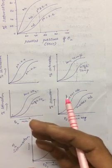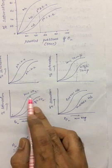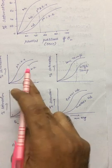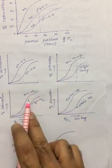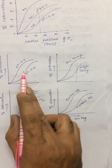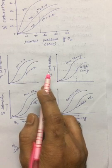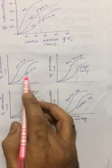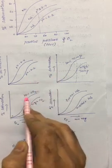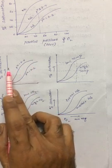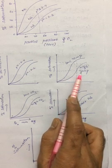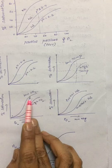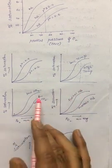For better saturation of hemoglobin with dioxygen, CO₂ should be low, temperature should be low, and pH should be high. These three conditions determine whether the equilibrium shifts right or left. As pH increases, equilibrium shifts right; as pH decreases, it shifts left. As temperature increases, equilibrium shifts left; as temperature drops, it shifts right. Lower CO₂ shifts equilibrium right; higher CO₂ shifts it left.